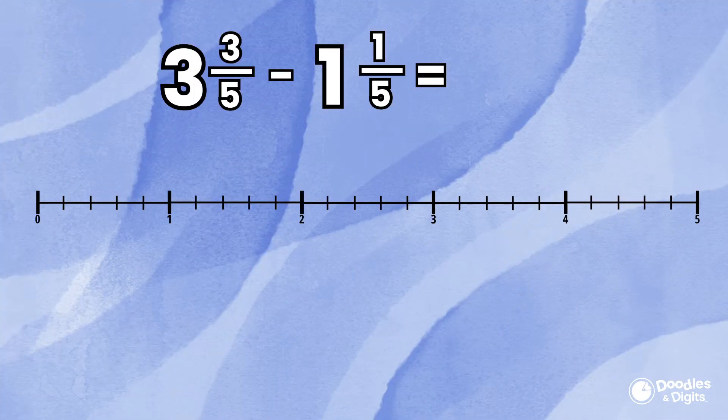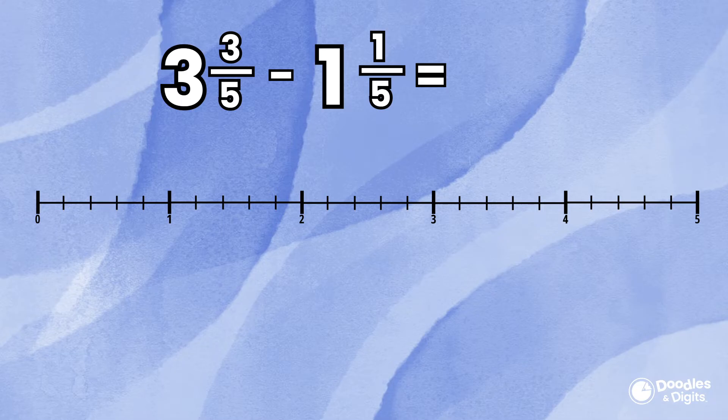Here, take a look at this. Let's look at this problem. Three and three-fifths minus one and one-fifth. I'm going to first put both mixed numbers on the number line. Now we're going to find the difference.